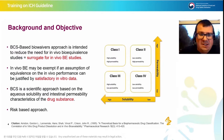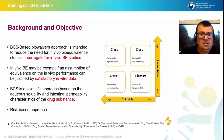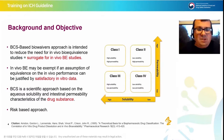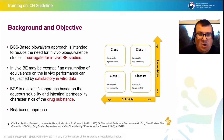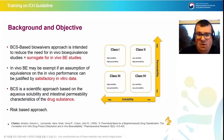The idea of BCS biowaivers is that we can use in vitro data as a surrogate for in vivo bioequivalence studies. That's a good thing because it means we can reduce dosing of medicines to healthy volunteers. It's a scientific, risk-based approach, and that is why we in industry like it.